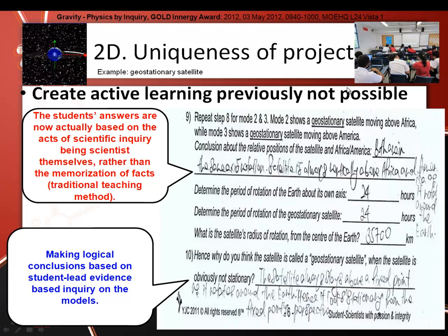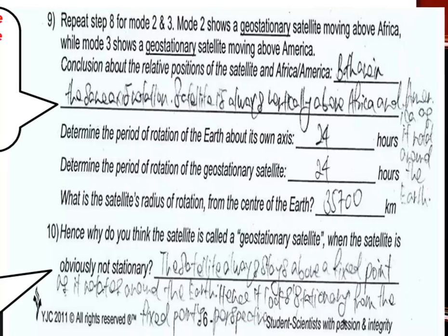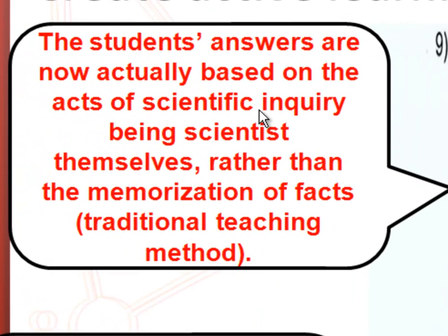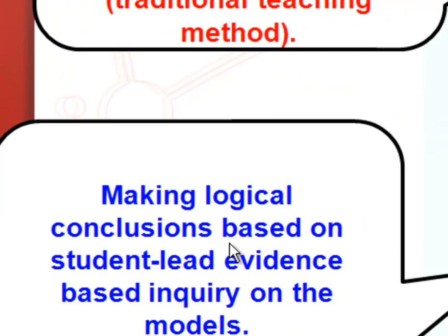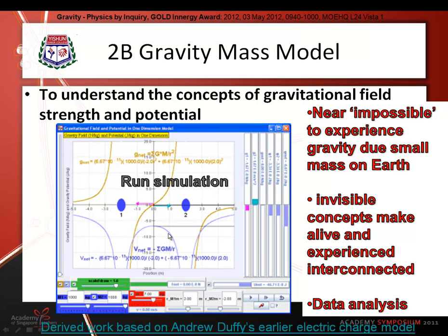From here, this is an artifact of an actual student's work. Students are now not just regurgitating or memorizing facts — they are actually behaving like scientists. They are looking at a simulation, making reasonable assumptions about it, and coming up with possible reasons why it is considered a geostationary orbit, which is what we are trying to do here.